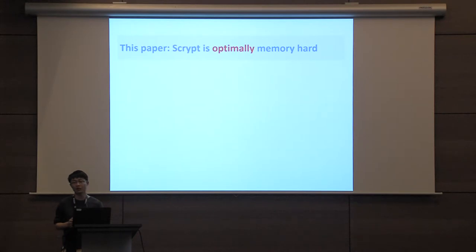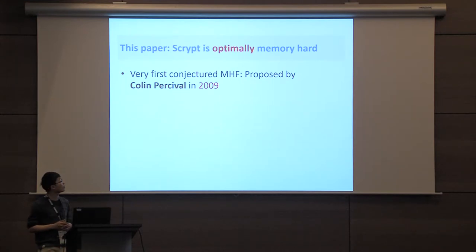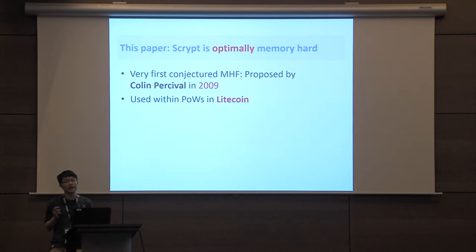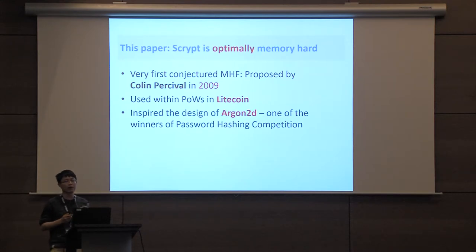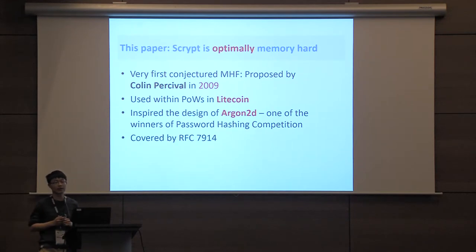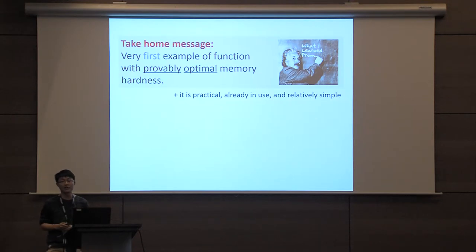Surprisingly the answer is positive. Our paper gives a rigorous proof showing that the data-dependent MHF called scrypt is indeed optimally memory hard. scrypt is the very first conjectured MHF proposed by Colin Percival in 2009. It is used as a proof-of-work hash within the cryptocurrency Litecoin. Moreover, it inspired the design of argon2d, a password hashing competition winner, and it is covered by an RFC standard.